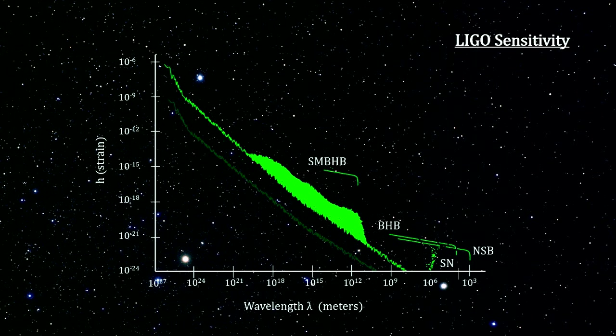On our sensitivity graph, we see where LIGO's characteristics fit. This is a range where powerful binary system mergers within the Virgo supercluster should be detectable.